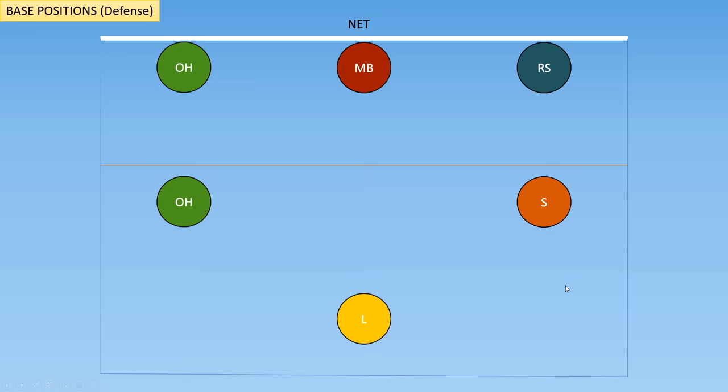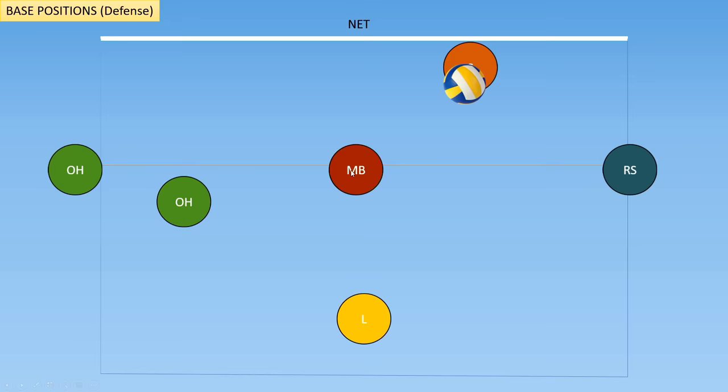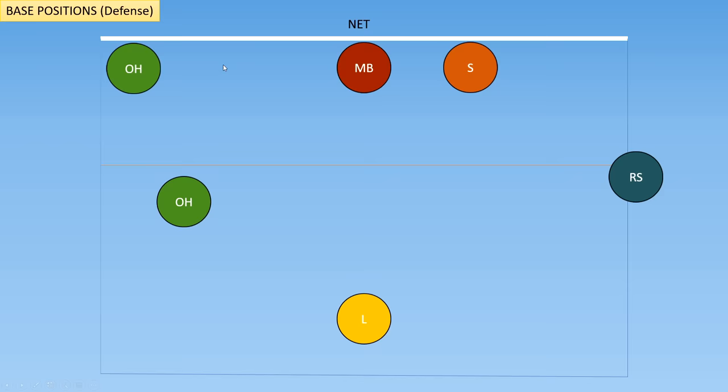Now I'm just going to run through an example play. The ball comes over the net and the libero gets the pass. As soon as the setter notices that they are not required for the pass, she is going to release to the net. At the same time, all of the players at the net are going to get ready to hit. And now the setter can set whoever she likes, whether that's the outside hitter, the middle blocker, or the right-sided hitter.